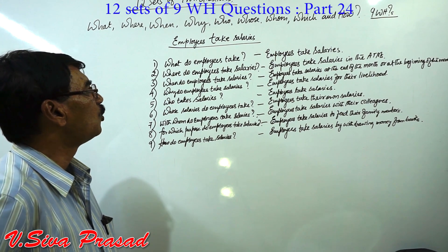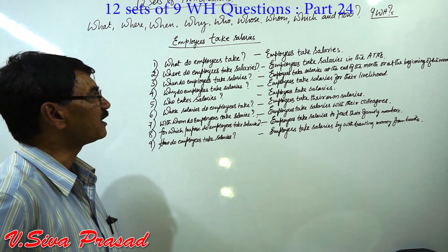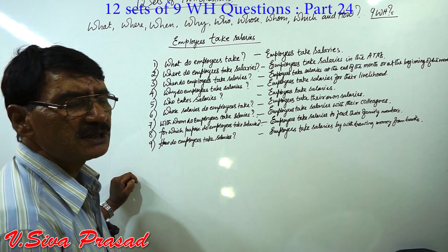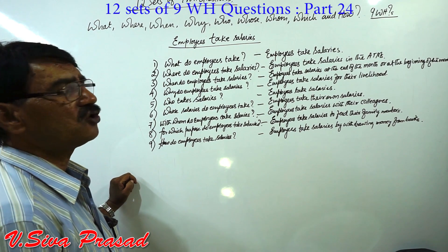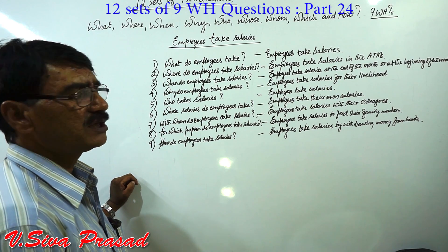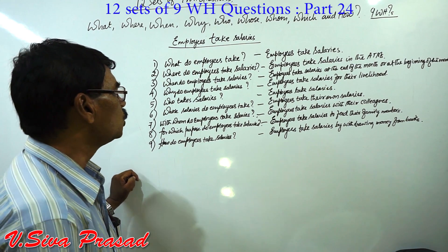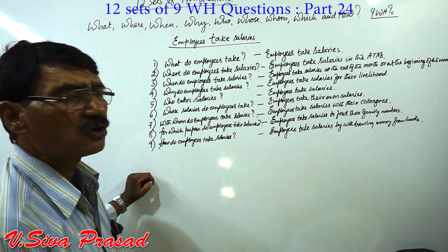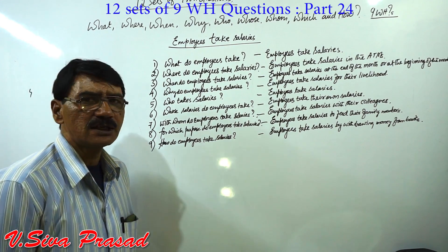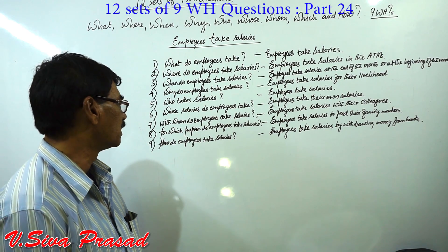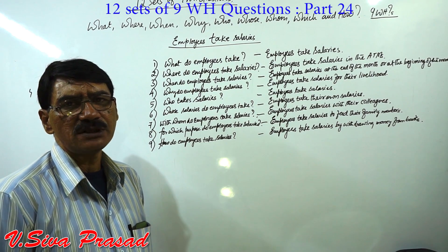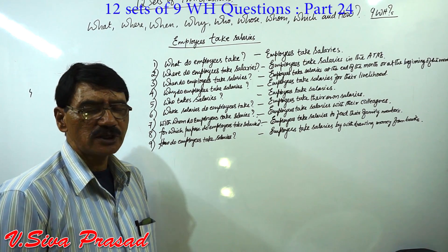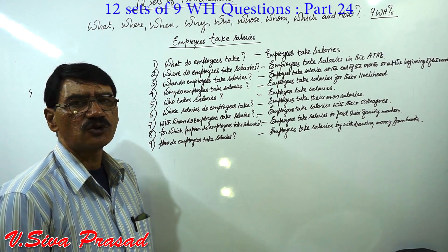Set 11 — Past Perfect Continuous: What had employees been taking? Employees had been taking salaries. Where had employees been taking salaries? Employees had been taking salaries in the ATMs. When had employees been taking salaries? Employees had been taking salaries at the end or at the beginning of the month. Why had employees been taking salaries? Employees had been taking salaries for their livelihood. Who had been taking salaries? Employees had been taking salaries. Whose salaries had employees been taking? Employees had been taking their own salaries. With whom had employees been taking salaries? Employees had been taking salaries with their colleagues. For which purpose had employees been taking salaries? Employees had been taking salaries to feed their family members. How had employees been taking salaries? Employees had been taking salaries by withdrawing money from the banks.